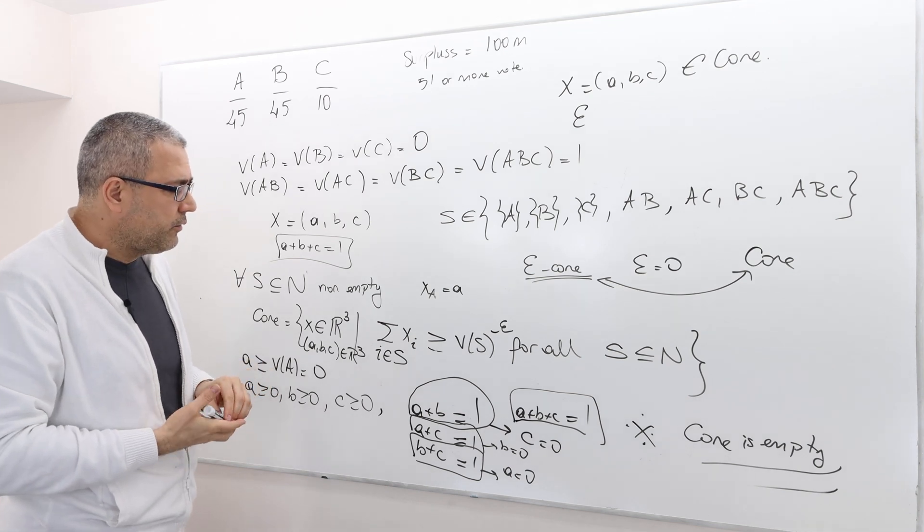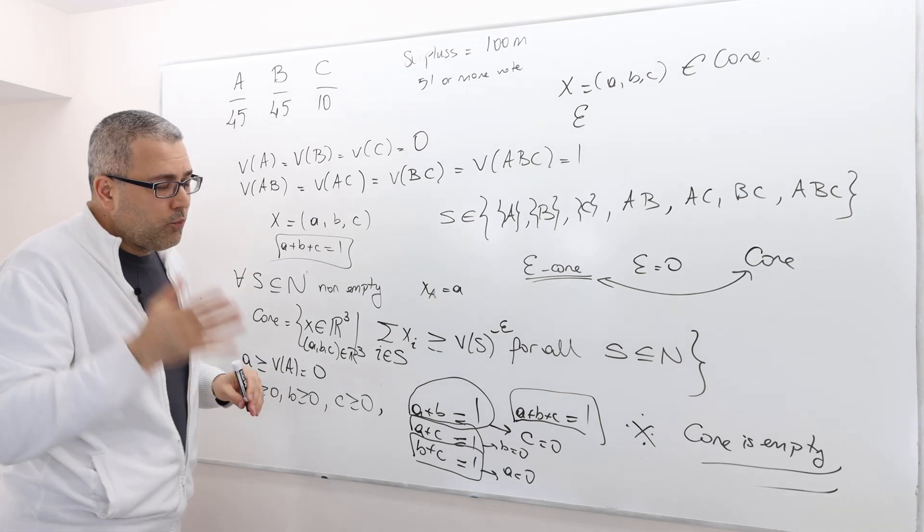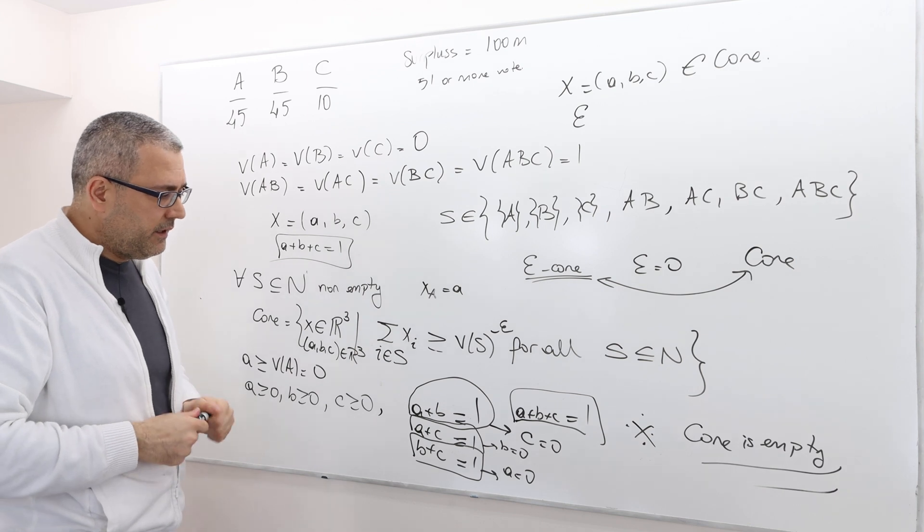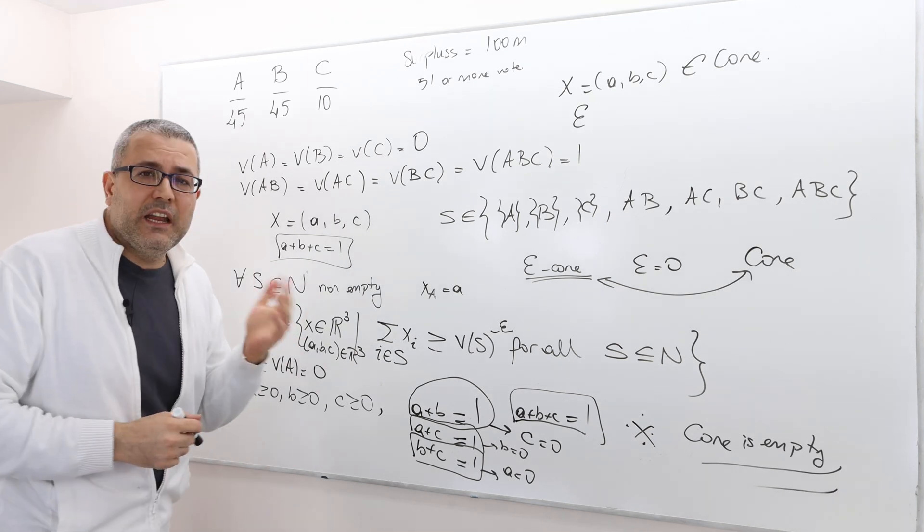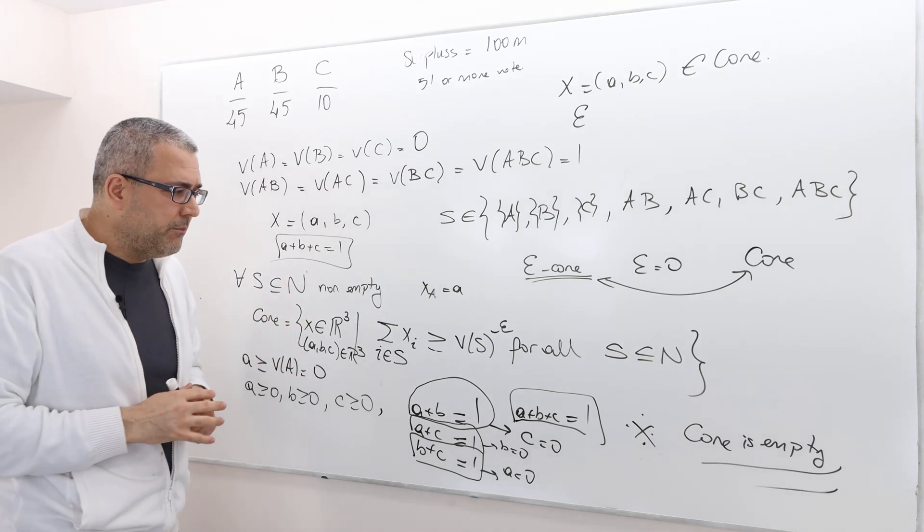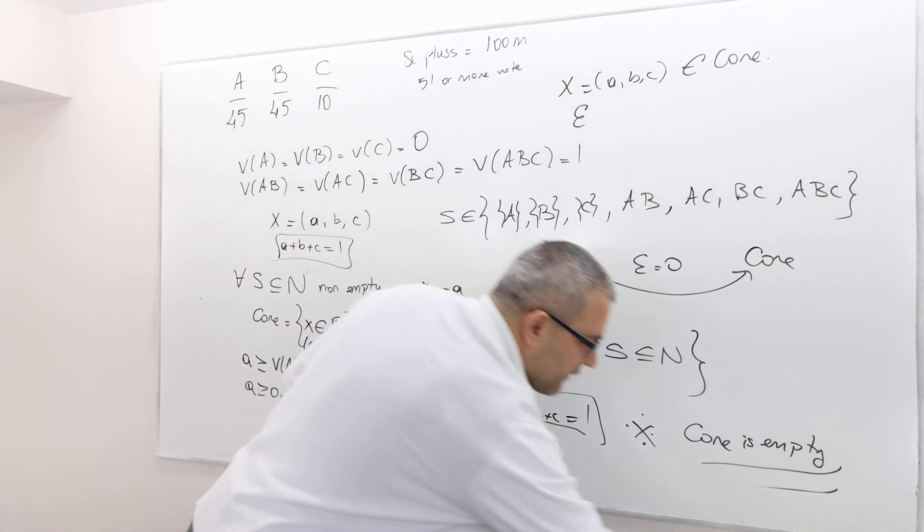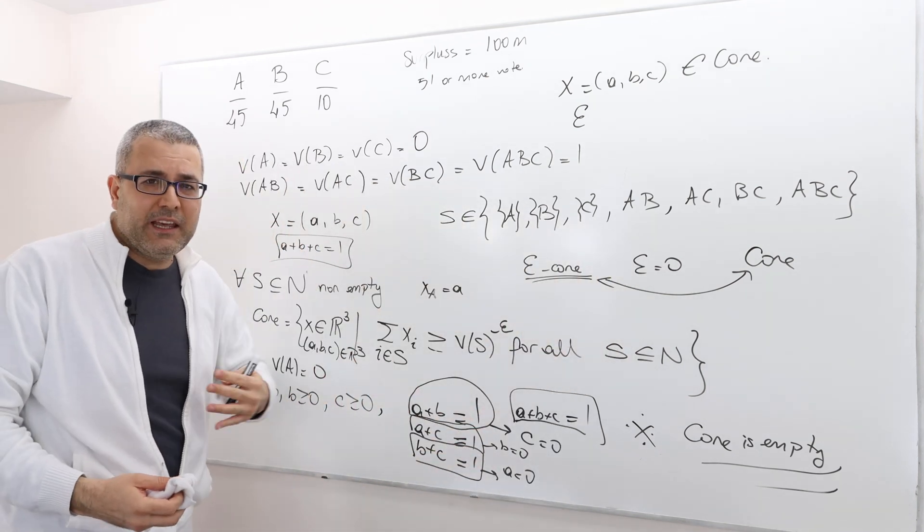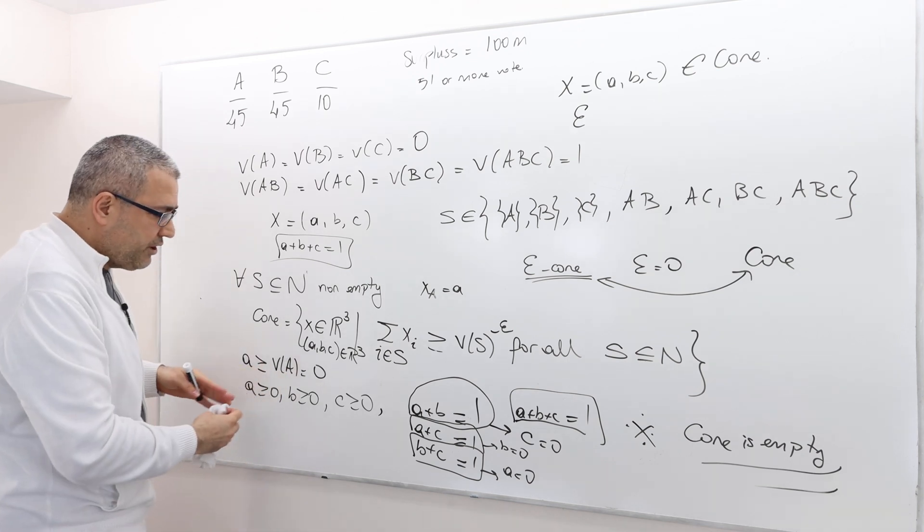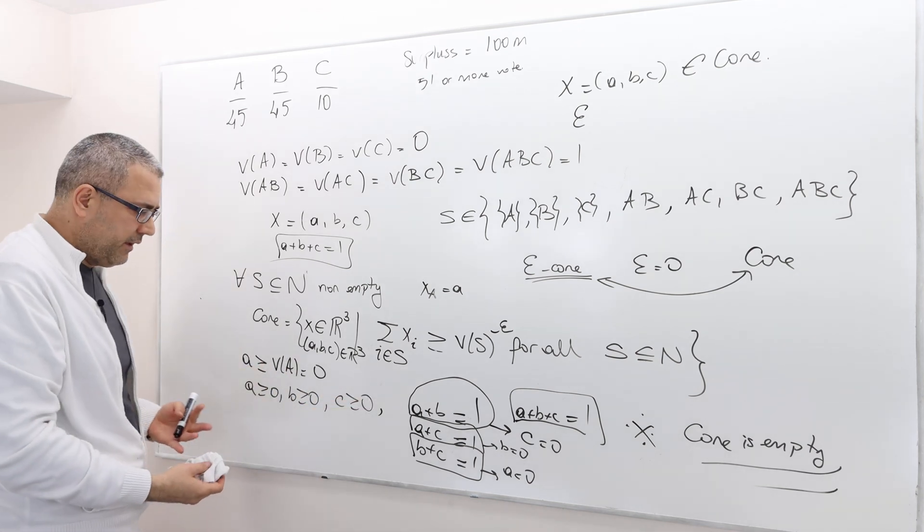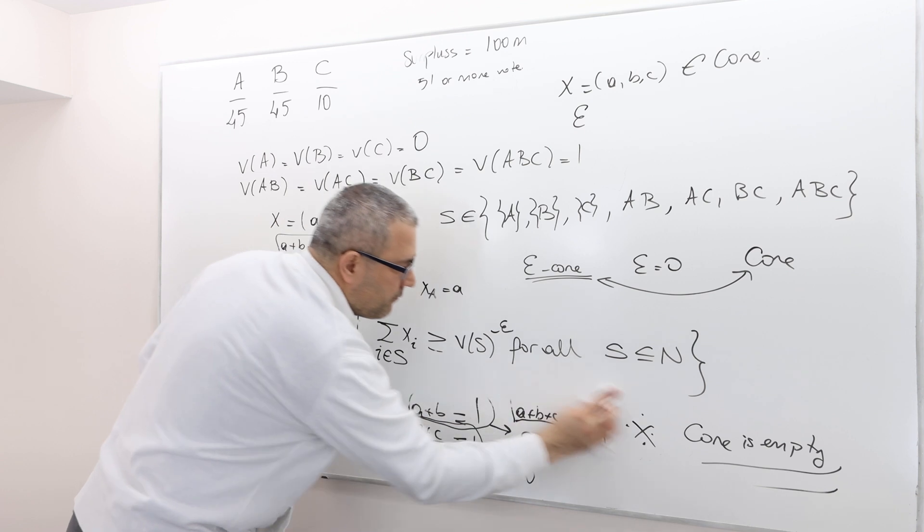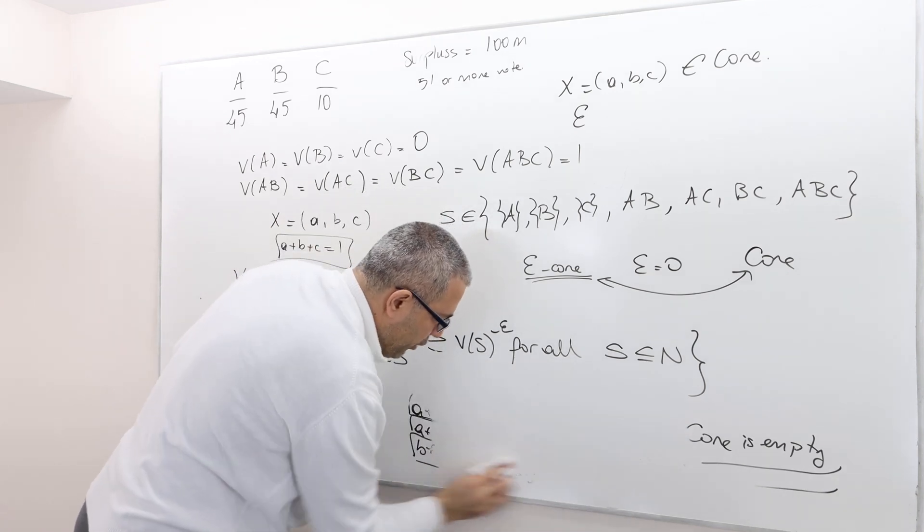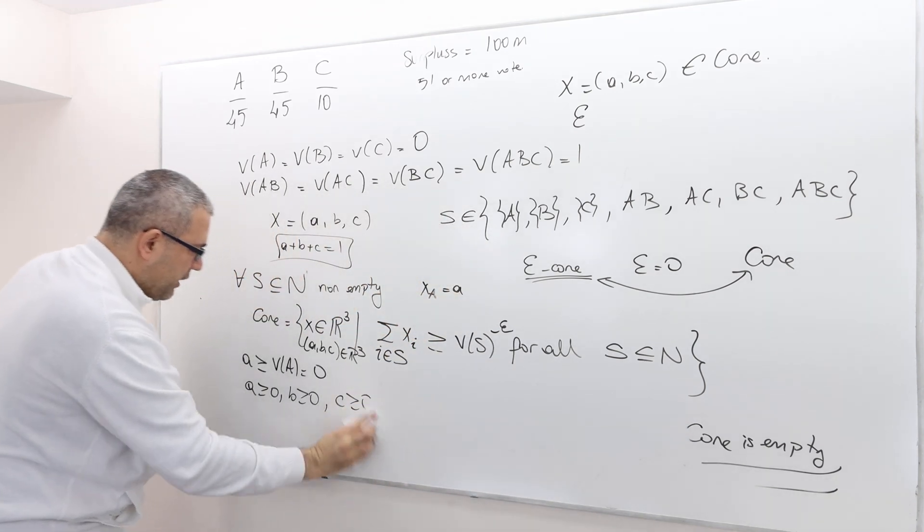One question is, obviously, is there any epsilon core and what would be the minimum epsilon? Well, in this case, all you have to do, instead of making a guess and verify, you would just need to rewrite everything here. So what would be my system of inequalities?